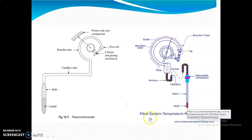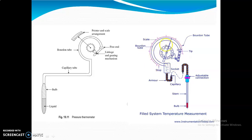Here you can see the filled system temperature. You have a bulb, then a stem adjustable connection connected via socket, capillary, then armor which is stainless steel — a material connected to the Boudin. This Boudin tube is mainly for the purpose of measuring pressure. Whatever expansion happens, you can directly measure the pressure. The expansion is because of the temperature, and that is how the temperature and pressure of a particular volume of gas or liquid is measured.